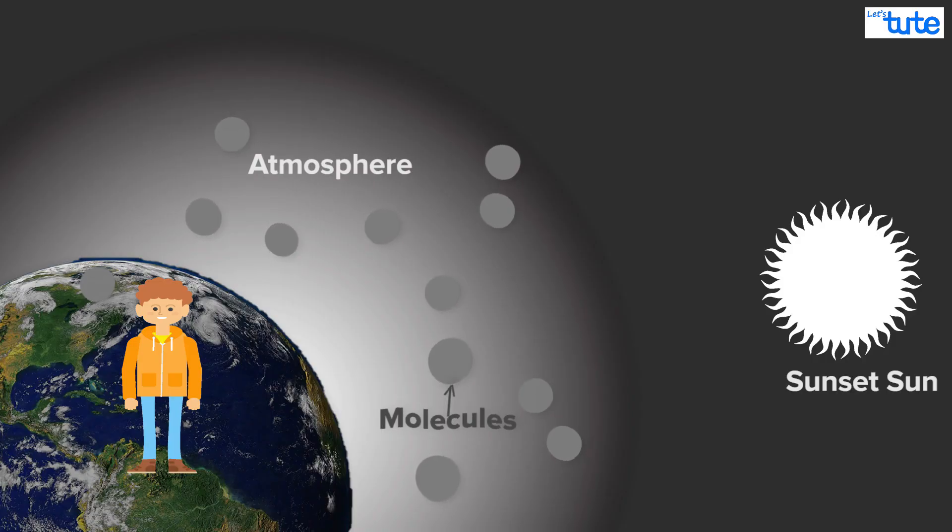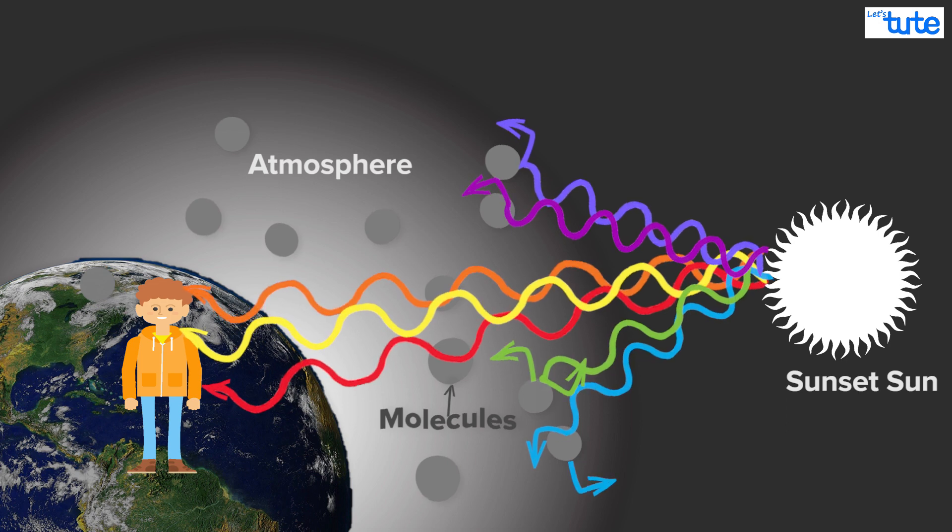This is better seen during sunsets when the light has to travel even more distance and so only the longest of the wavelengths reach your eye unscattered, which is why you see the red sun of sunset.